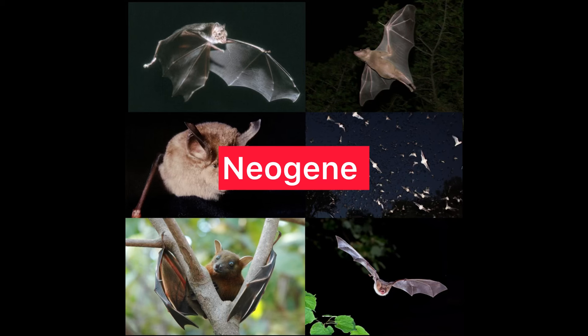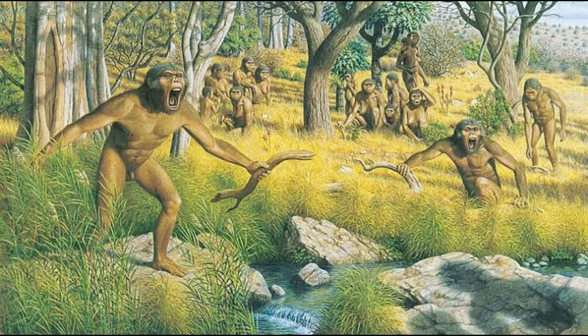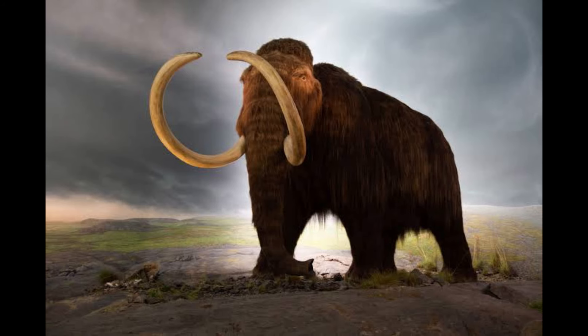The Neogene period, from about 23 to 2.6 million years ago, was a time of continued mammalian diversification. During this period, the continents continued to drift towards their present positions, leading to changes in climate and the development of new habitats. One of the most significant ecological changes was the spread of grasslands, which had a profound impact on mammalian evolution — particularly for herbivores. Grazing mammals such as horses and antelopes evolved adaptations for eating grass, including high-crowned teeth and specialized digestive systems.